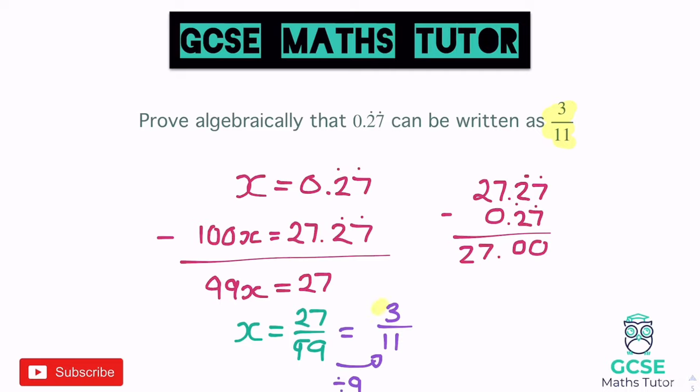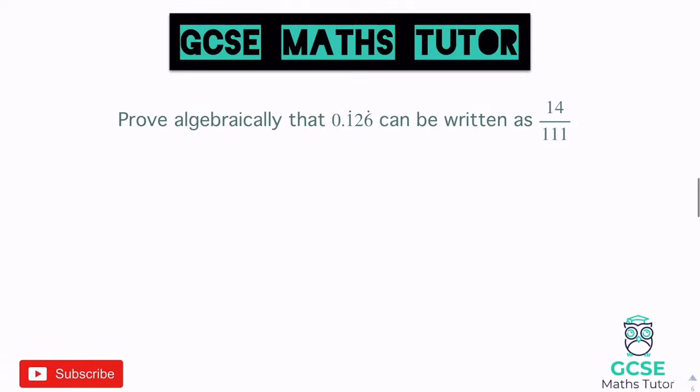It might be that you just have to show some division working out there. And there's our answer for that one. Now let's look at one more. This question says: prove algebraically that 0.126 can be written as 14 over 111 — not the nicest of fractions, but in this one we've got a different recurring pattern.